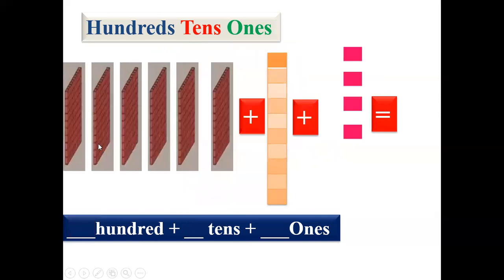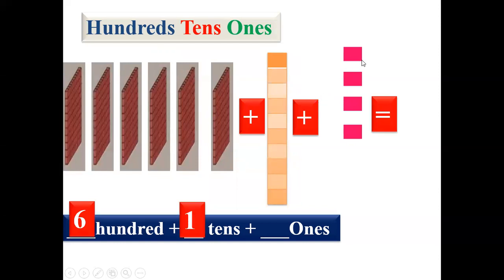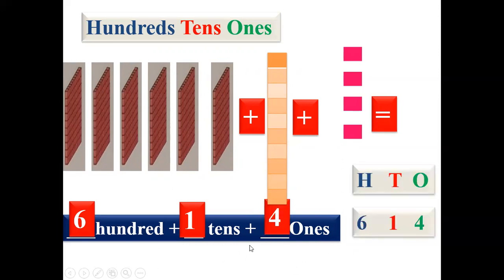Now the next one — count these hundreds: one, two, three, four, five, six — we'll write six hundreds. We can see only one column for tens, so we'll write one. And here we can see one, two, three, four ones. So we'll write six in hundreds, one in tens and four in ones.